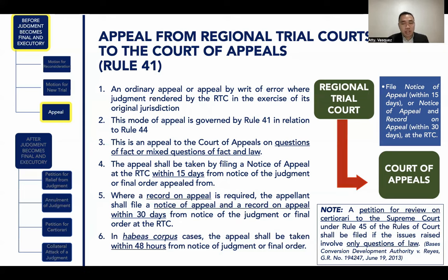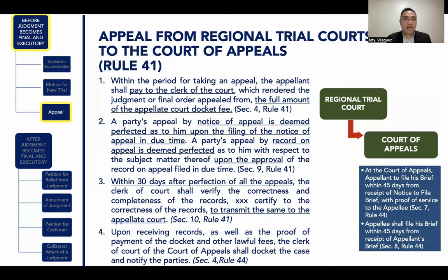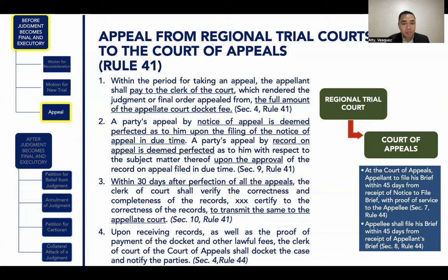If the appeal from the Regional Trial Court involves purely questions of law, the case shall be appealed to the Supreme Court by filing a petition for review on certiorari. Within the period for taking an appeal, the appellant shall pay the clerk of court the full amount of the appellate court docket fees. A party's appeal by notice of appeal is deemed perfected upon filing in due time; an appeal by record on appeal is deemed perfected upon the approval of the record on appeal filed in due time.